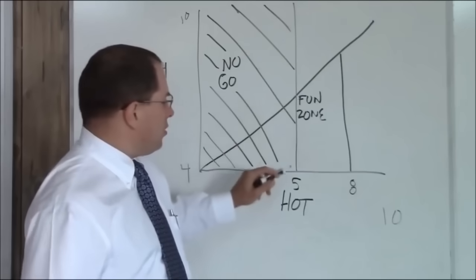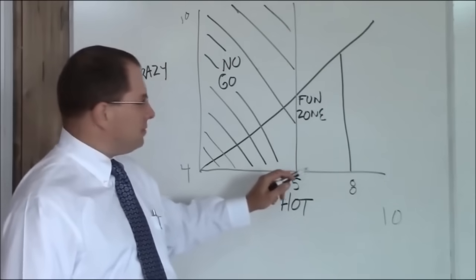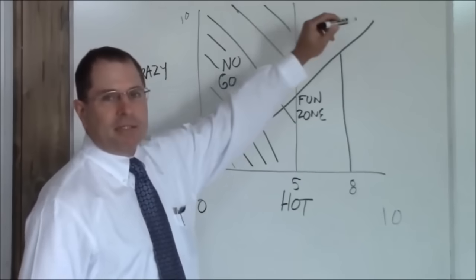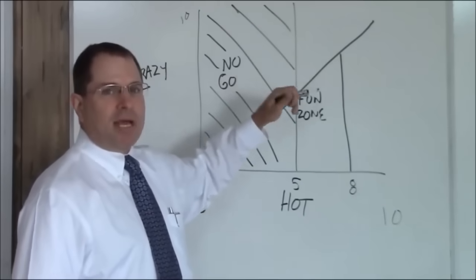So that's the fun zone above a 5, below an 8, and below the crazy line. This means these are, most of the time, not crazy.